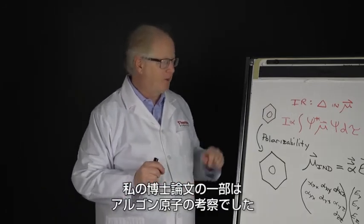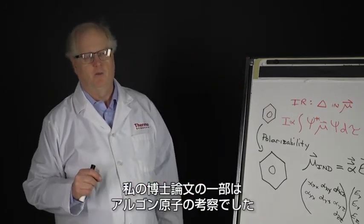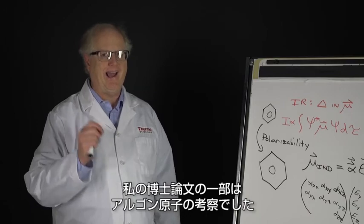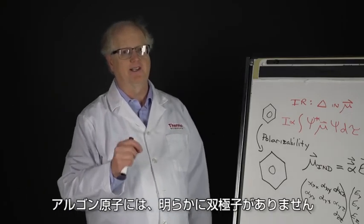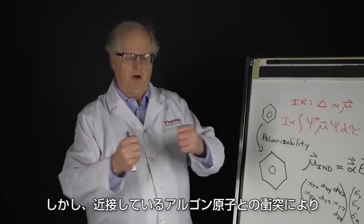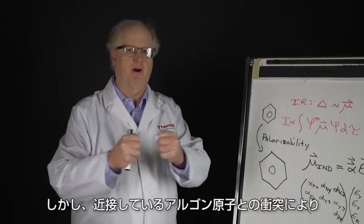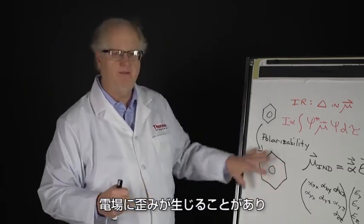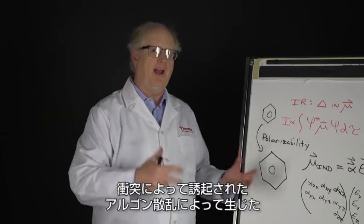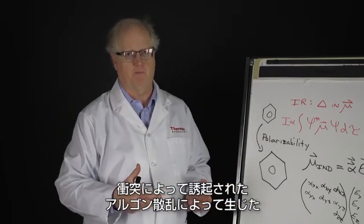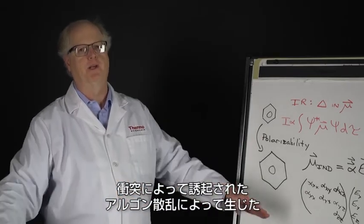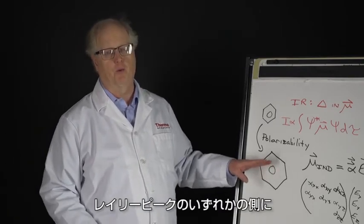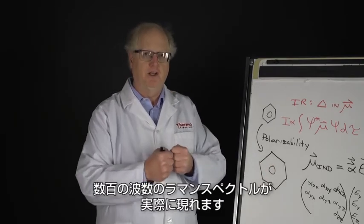Actually, part of my PhD thesis was looking at the argon atom. The argon atom obviously does not have a dipole, but because of collisions with neighboring argon atoms, the electron field could be distorted and you actually saw Raman spectrum several hundred wavenumbers either side of the Rayleigh peak caused by this collision-induced scattering of the argon.